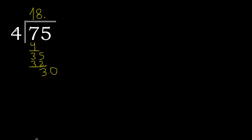Bring down: 30. 4 multiplied by 8 is 32 — that is greater. Multiplied by 7 is 28. Subtract: 30 minus 28 is 2. There is no next number, so complete with 0. The decimal point is here.